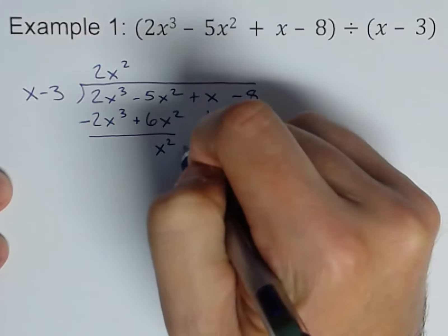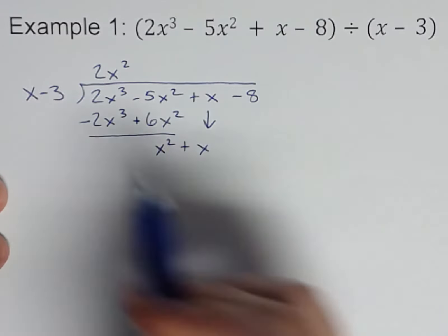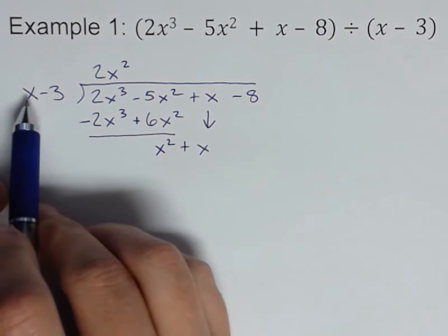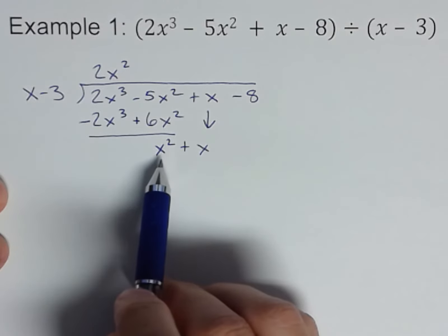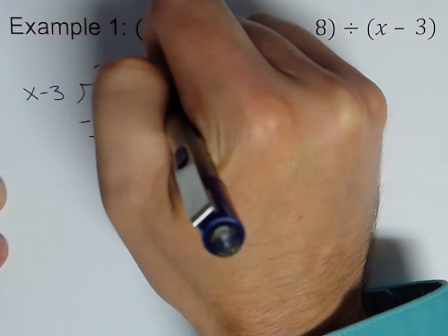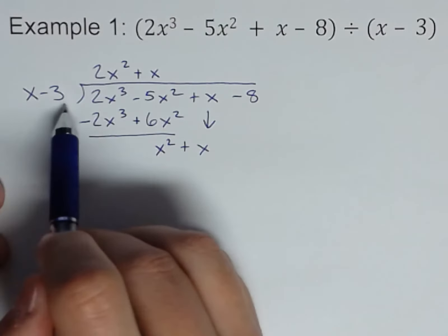Now go through the process again. Keep going. So x into x², or in other words x² divided by x, or x times what would give me x²? Well, that's going to be x. So plus x, and repeat the process.